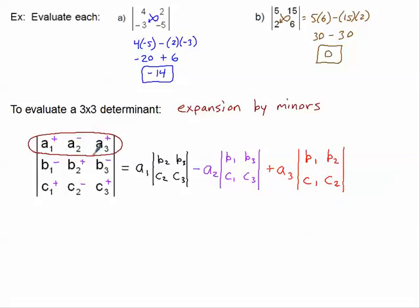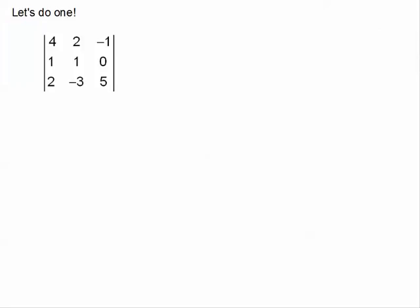That's the algorithm for expansion by minors when picking the first row. I know it might be confusing with all these letters, so let's try an example with numbers. Here we are with a 3x3 determinant, and I get to pick whichever row or column I want. My eyes instantly see this 0, so I'd like to use that 0 because 0 times anything is just 0 — it minimizes my work. I could pick the middle row, but I'm going to pick this final column and circle it.